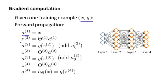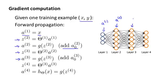The first thing we do is apply forward propagation in order to compute what our hypothesis actually outputs given this input x. Recall that a1 is the activation values of the first layer, that is the input layer, so we set that to x. Then we compute z2 equals theta1 times a1, and a2 equals g, the sigmoid activation function applied to z2. This gives us our activations for the first hidden layer, that is layer two of the network, and we also add the bias terms. Next, we apply two more steps of forward propagation to compute a3 and a4, which is also the output of our hypothesis H of x. This is our vectorized implementation of forward propagation and it allows us to compute the activation values for all of the neurons in our neural network.